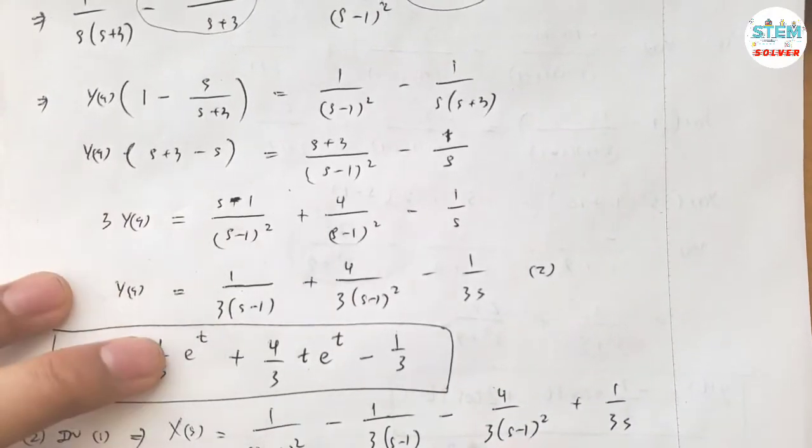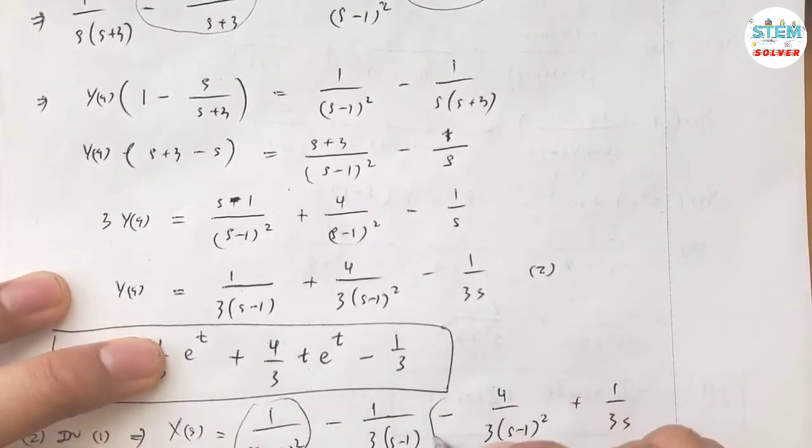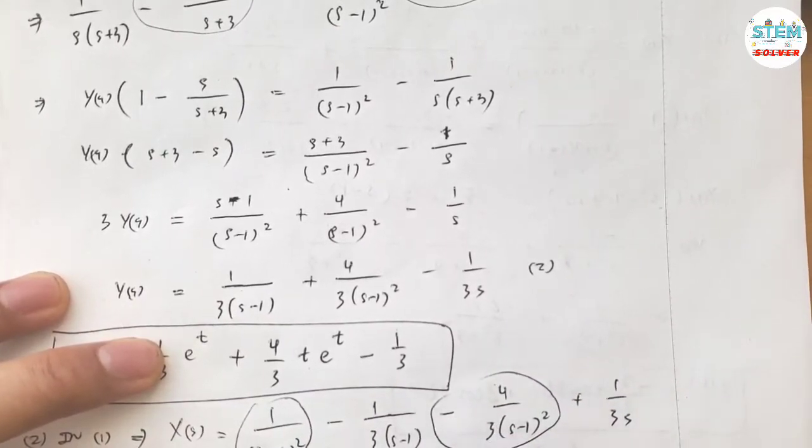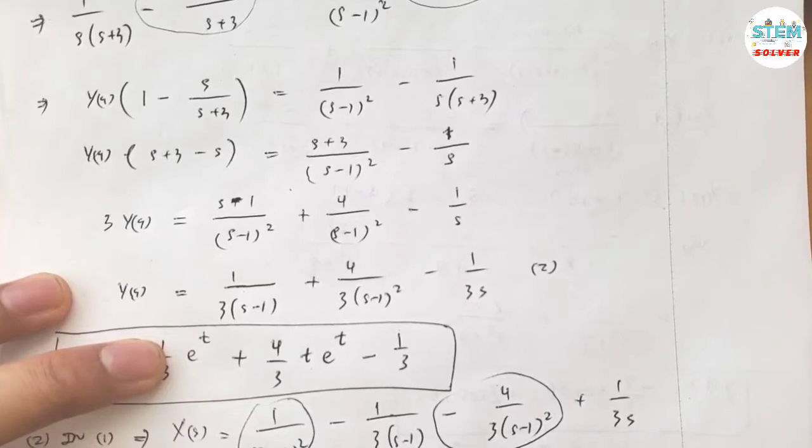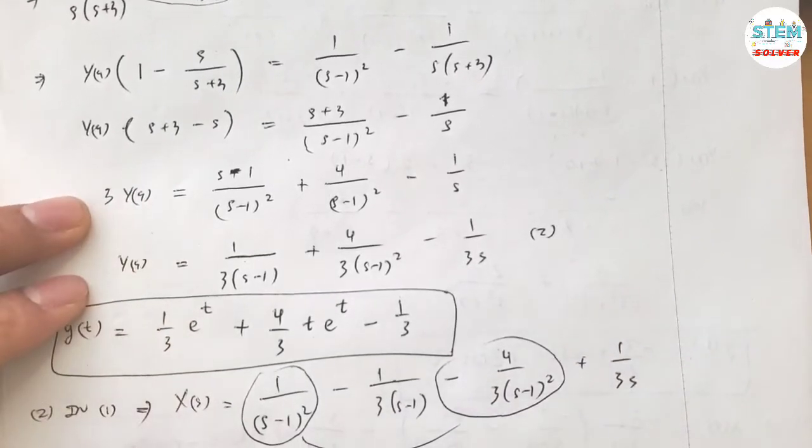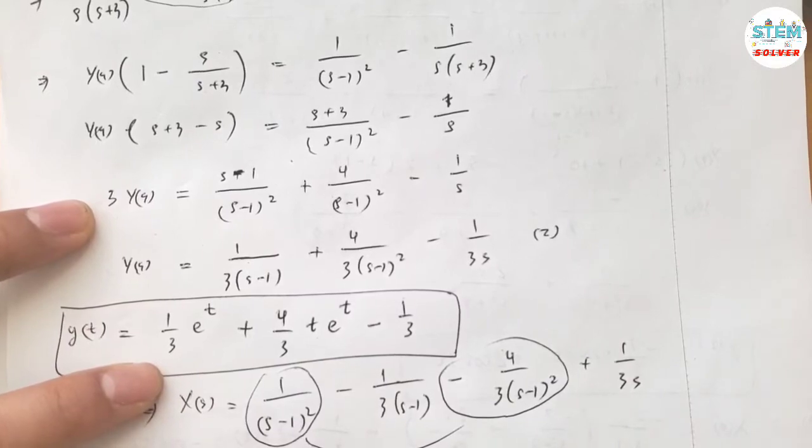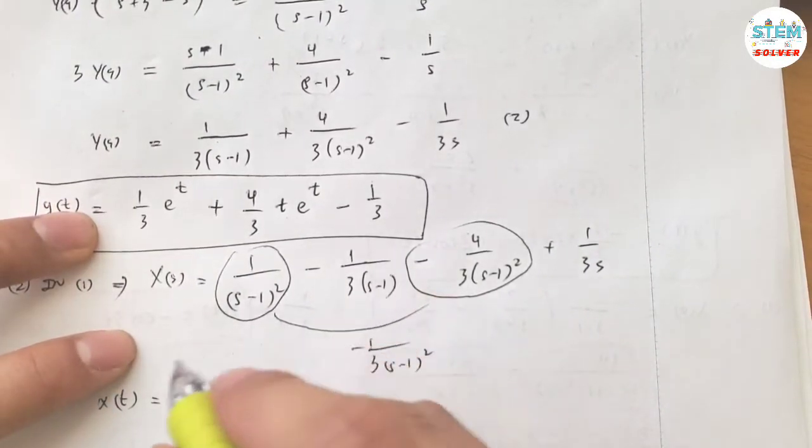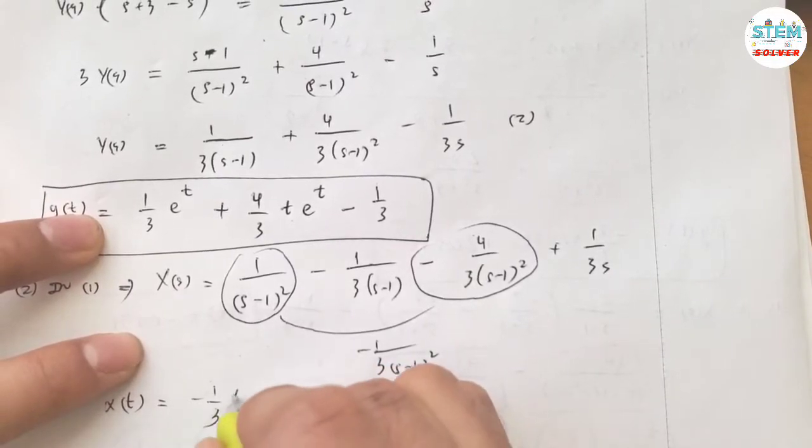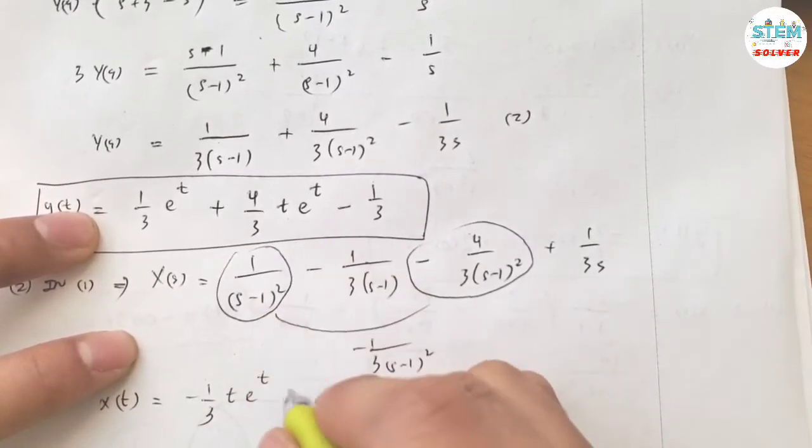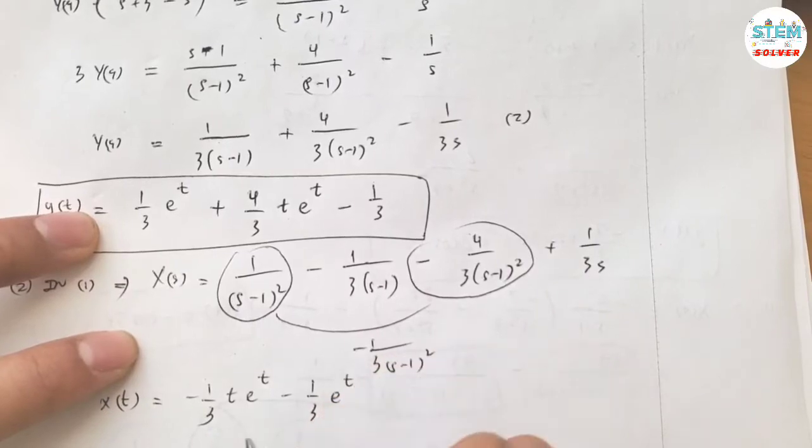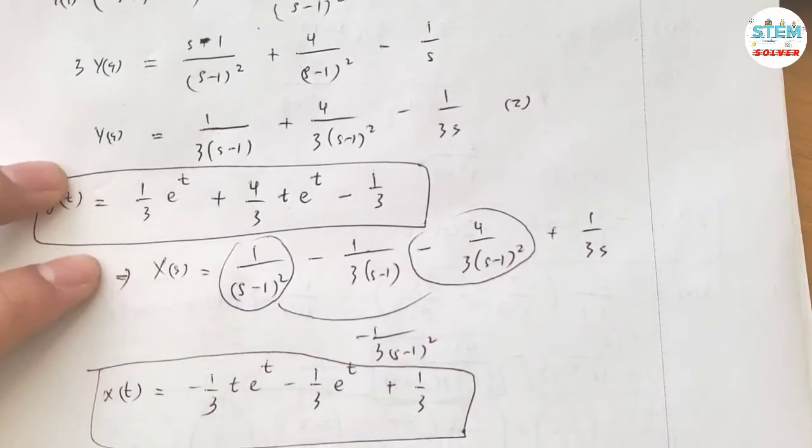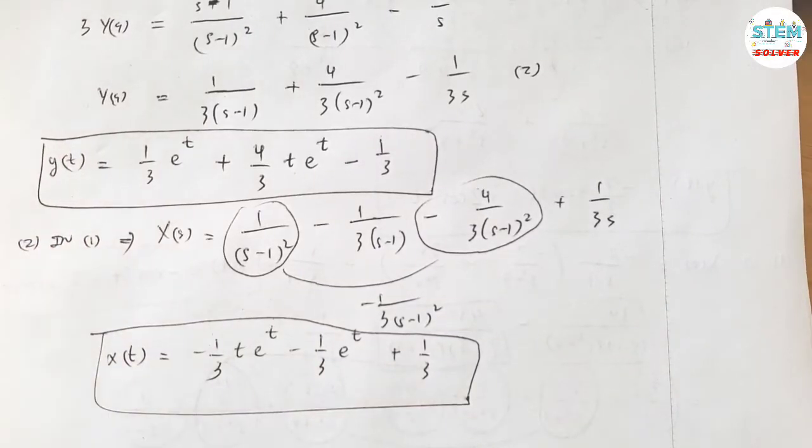Simplify it. I have 4 third minus 1 third, that's negative 1 third S minus 1 squared. Now take the inverse of this one. So negative 1 third t e to the t minus 1 third e to the t plus 1 third. So this is your X(S) equation. And that's it.